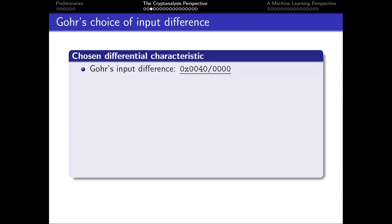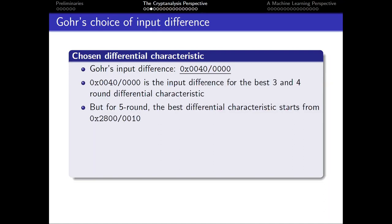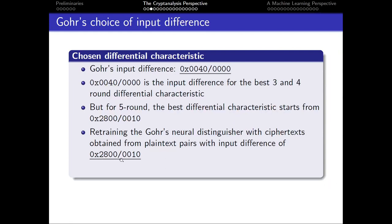For the ciphertext pairs Gohr used to train the neural distinguisher, they come from plaintext pairs with a particular input difference having just a single active bit on the left part. While this is the best input difference for differential characteristics for 3 and 4 rounds of the SPECK round function, it is not for 5 rounds. For 5 rounds, the best differential characteristic starts from a different input difference. We retrained Gohr's neural distinguisher using this input difference, and the accuracy was around 76%, compared to 93% in the 5-round case — quite counterintuitive, as we would expect the best differential characteristic to yield equal or better results.